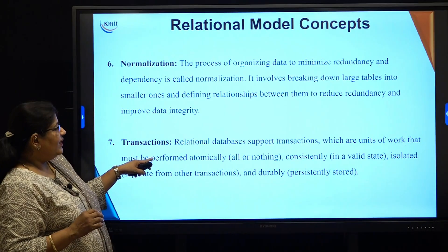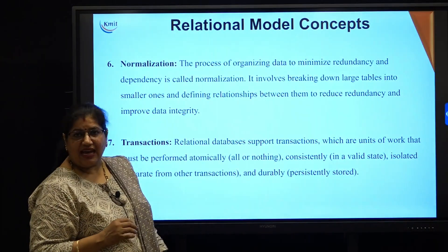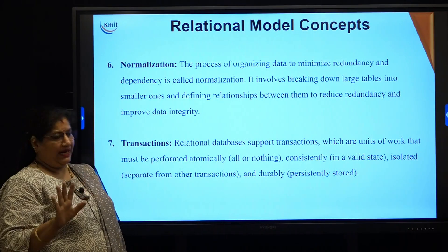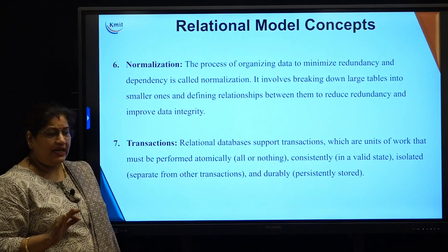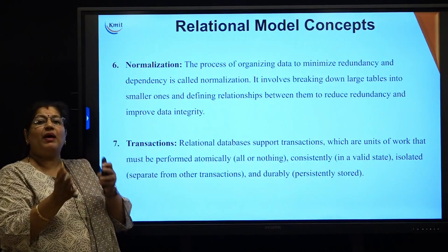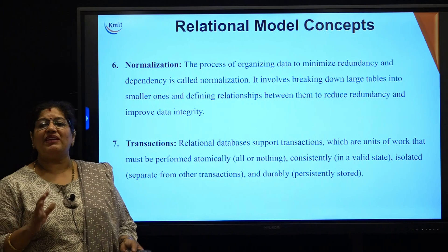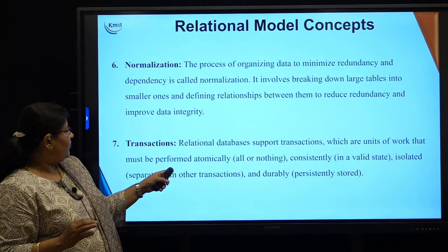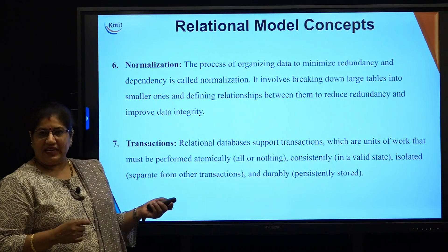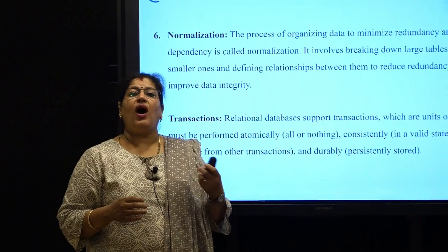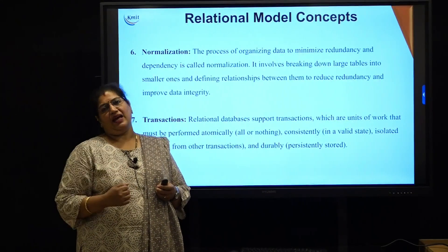Finally, transactions: a relational database supports transactions, which are units of work that must be performed atomically — either all or none. They must be consistent, meaning the database should remain in a valid state. They must be isolated, meaning one transaction should be separated from another. And they must be durable, meaning persistently stored. These properties are known as ACID properties. The relational model is a basic framework used in most databases today. We will look at how to construct this relational model in the next video. Thank you.